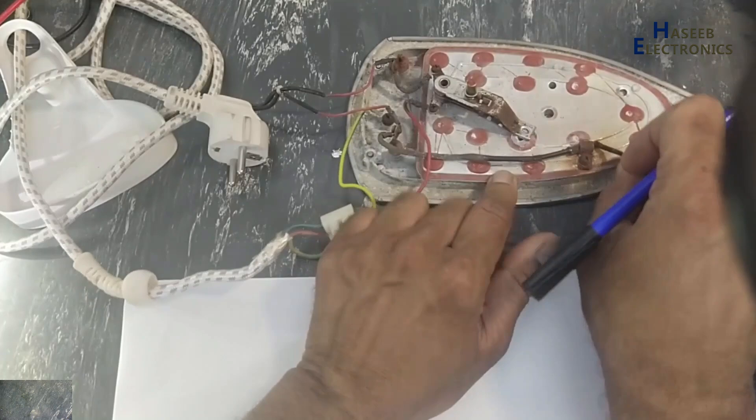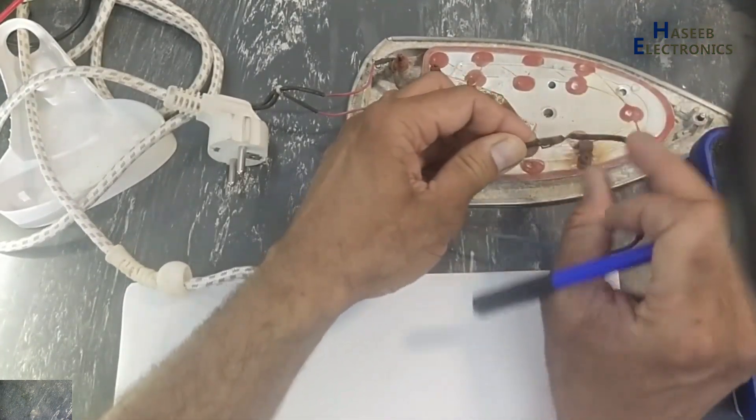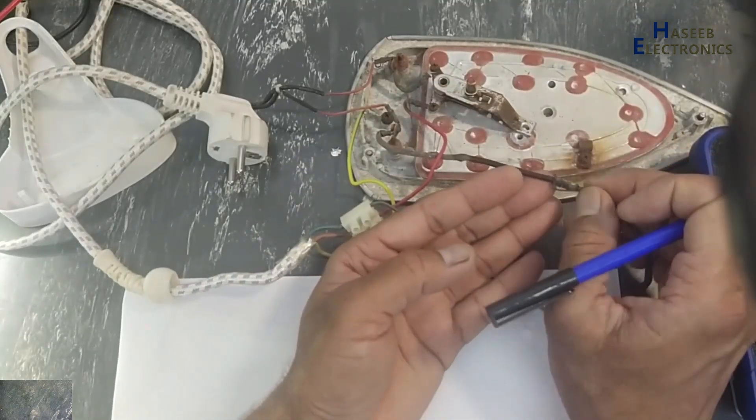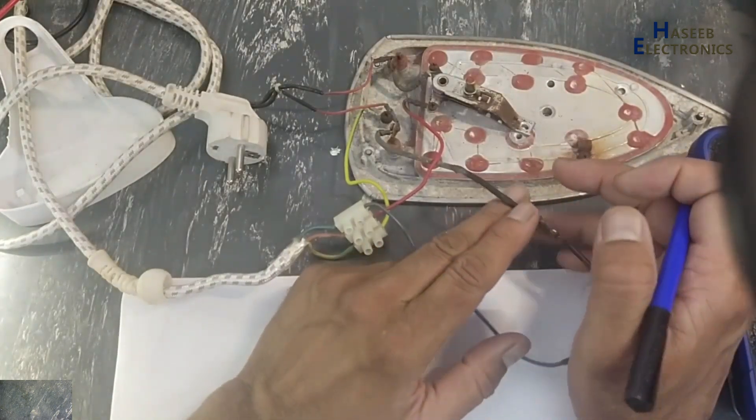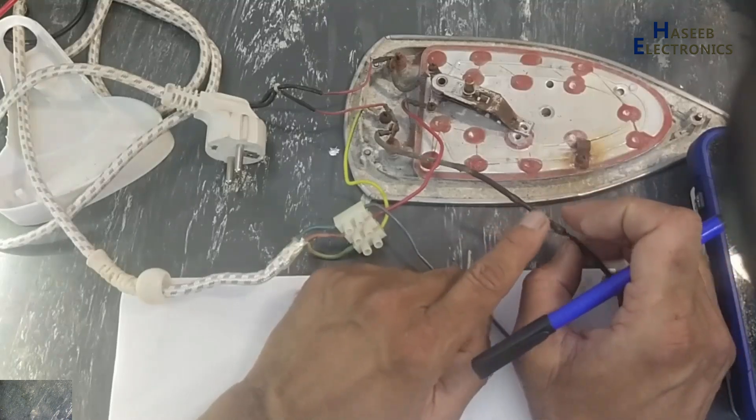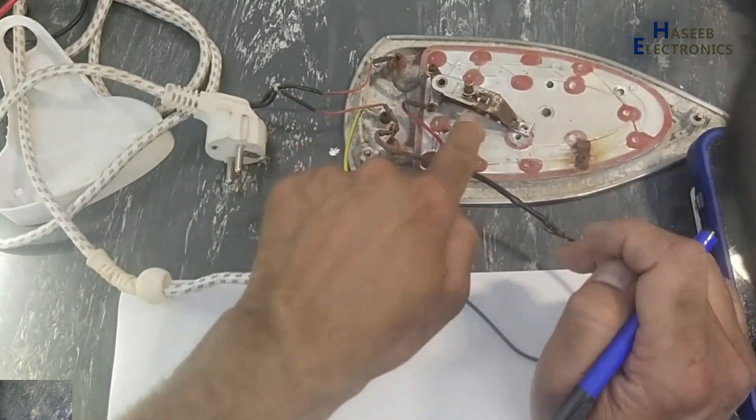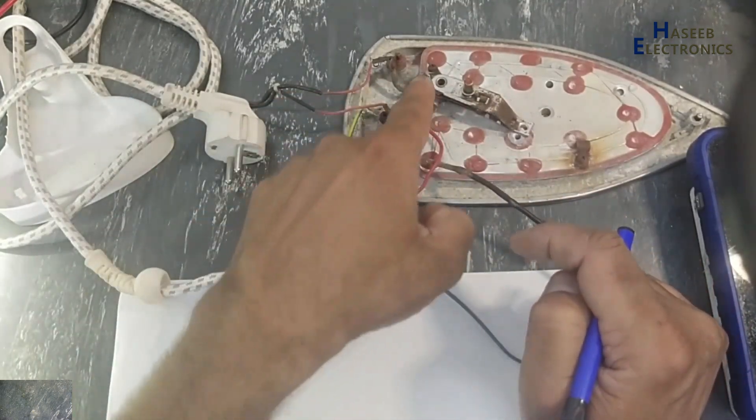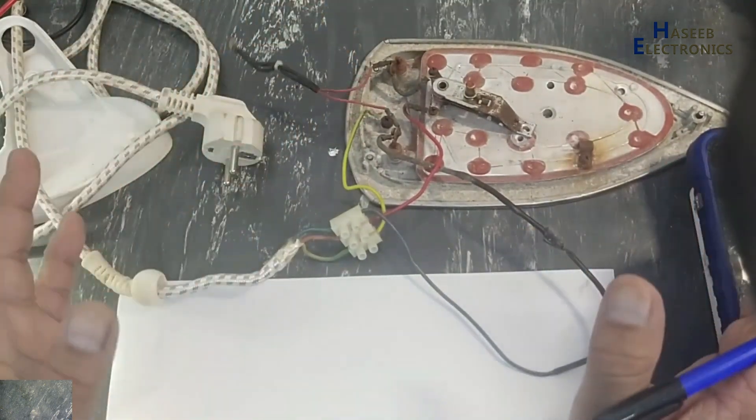At this temperature level - that is the specification of this thermal fuse - let's suppose 180 degrees Celsius, 200 degrees Celsius, 160, depending on the heating capacity of this iron, it will open. When it opens, all the circuit will be off. When the thermostat turns on, it will provide live voltage to this heating element and at the same time to this neon. This is the circuit.